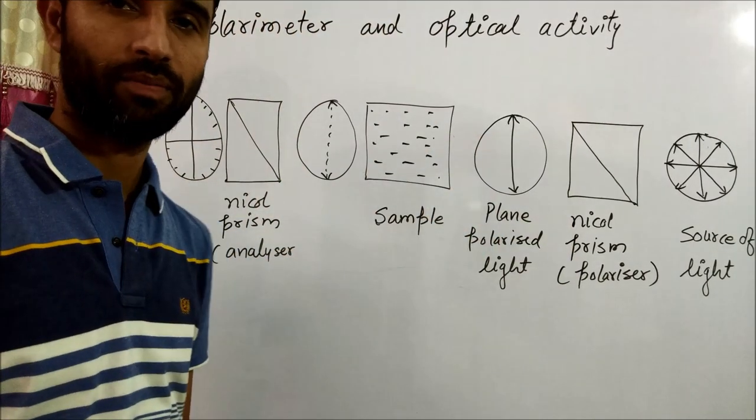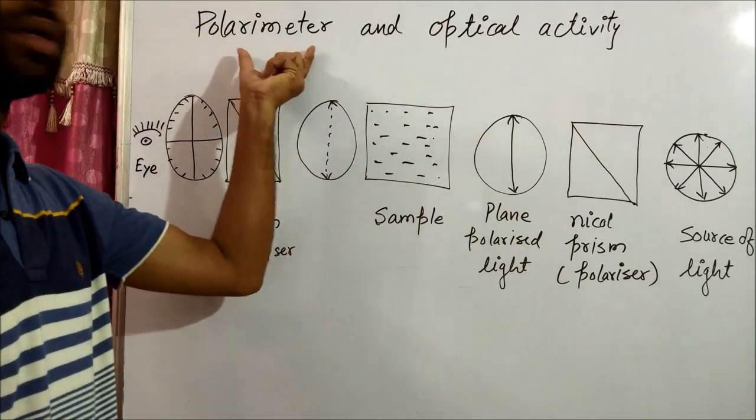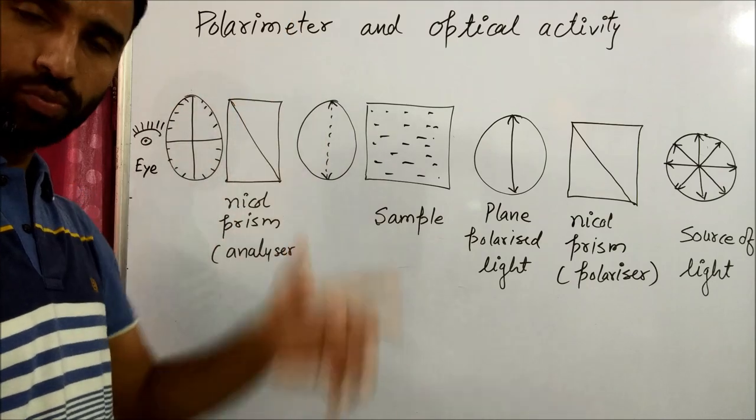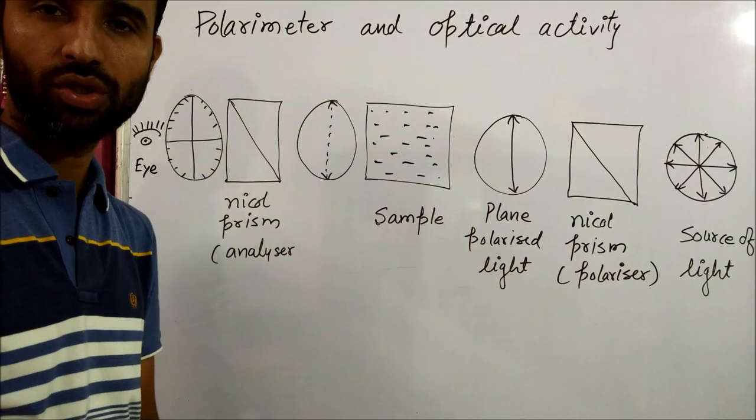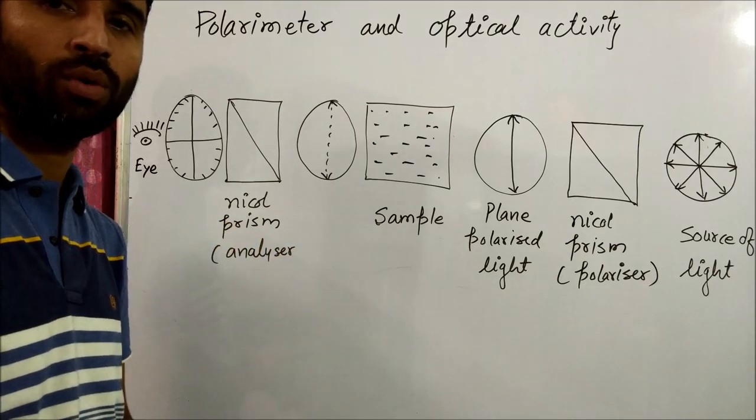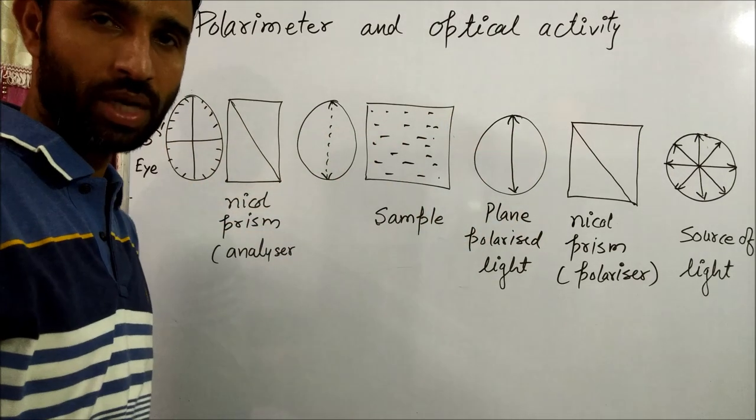Polarimeter and Optical Activity. This polarimeter is an instrument used to measure whether a substance is optically active or optically inactive. And how does it work?